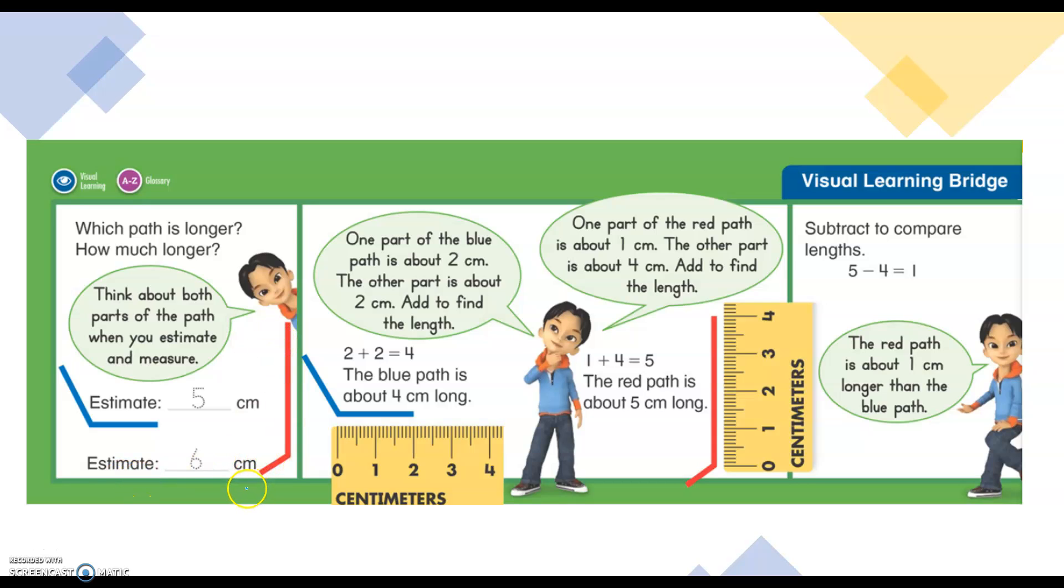One part of the blue path is about two centimeters. The other part is about two centimeters, so we can add those two parts together. You can see two here on the ruler. We start at the zero and we measure, and this end goes to the two centimeter mark. So we add the two centimeters plus the two centimeters and we get four. The blue path is about four centimeters.